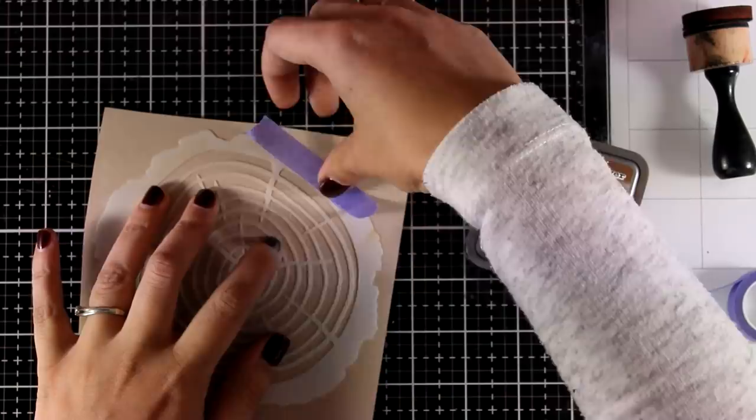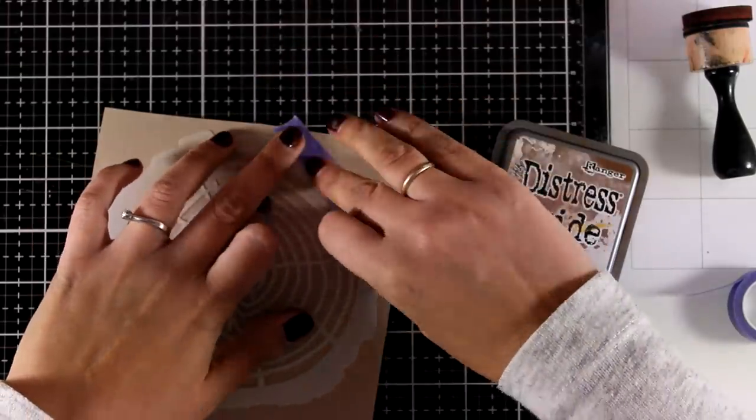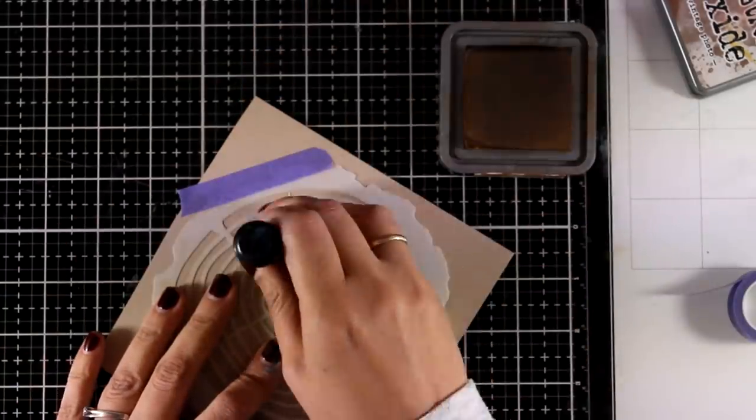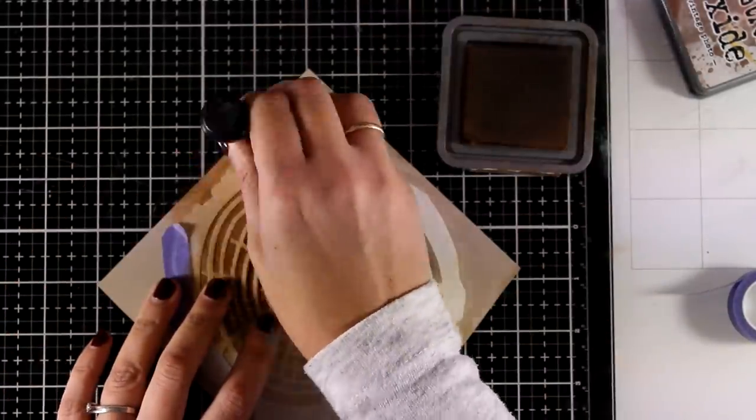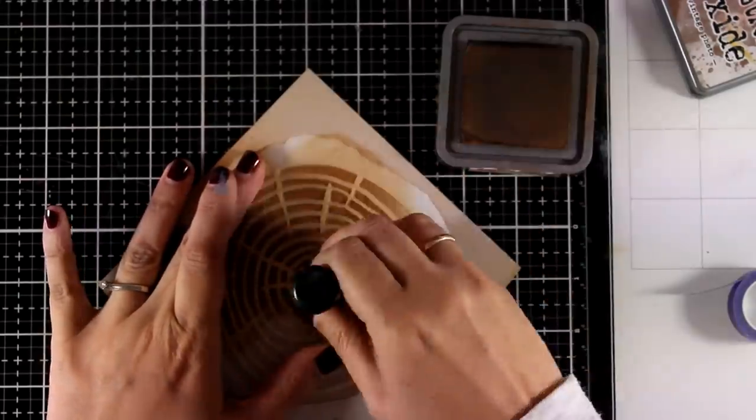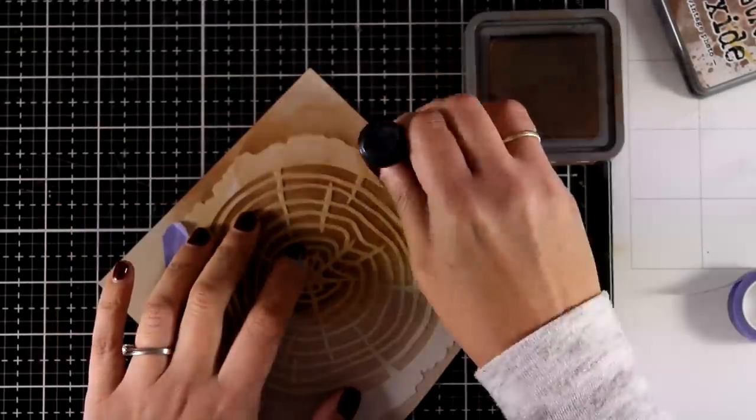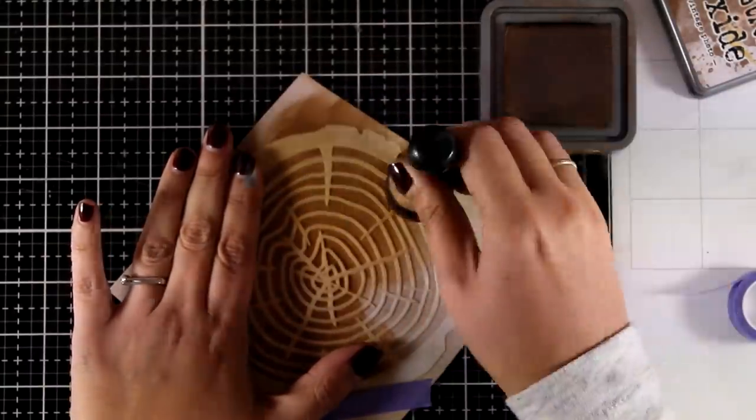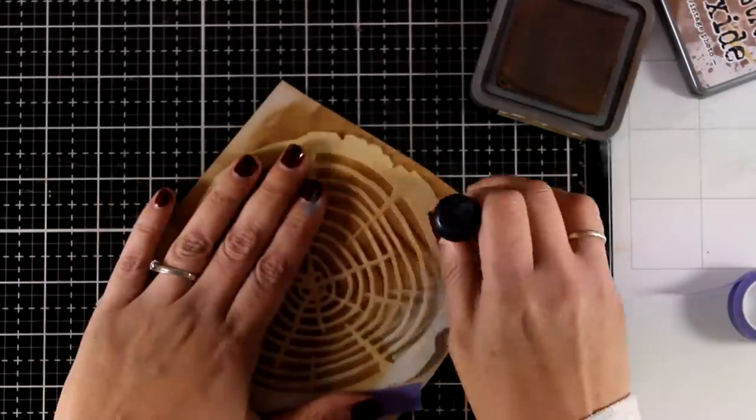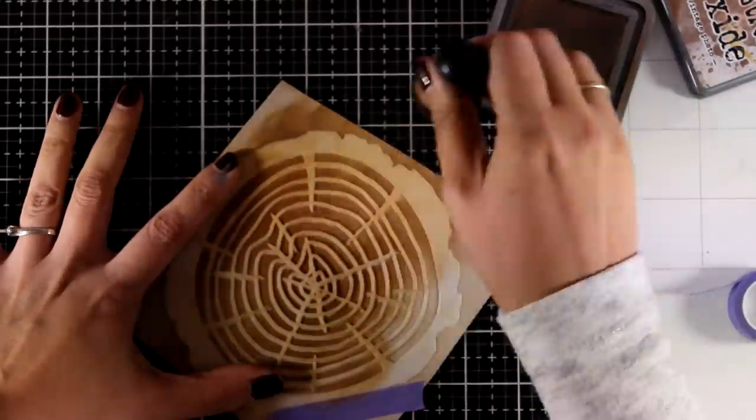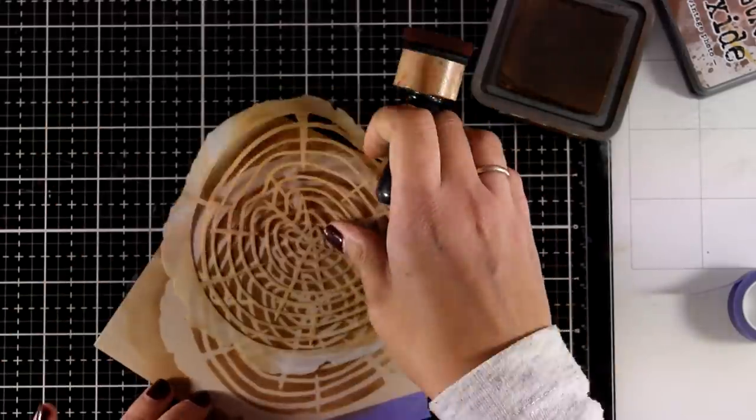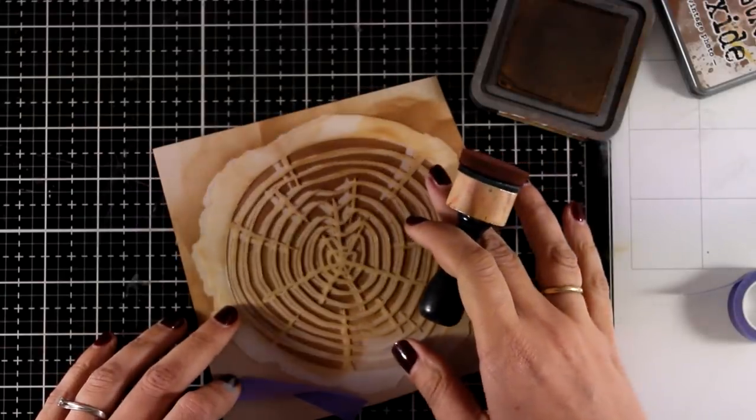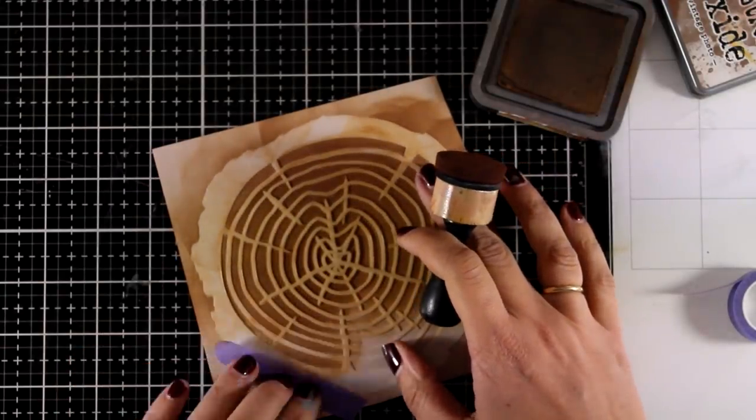I have been having this stencil for a long time. It is like a year old or maybe more. It is by Altenew and I never had a chance to use it. So today is the day. I am working on craft cardstock and I am applying on top vintage photo. I am making sure to go outside of the stencil so that I get a nice edge there. And I am not going to be super neat about applying it all over the place. I am only going to use just a part from this stencil image.